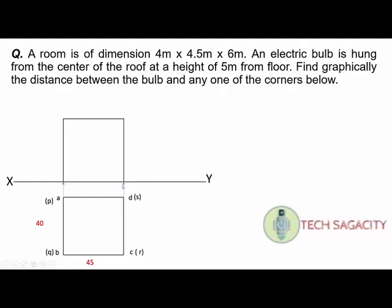The dimensions are 45 and 60, with height 6 giving 60 mm. Naming the floor points: P', Q', S', R' for the floor, and A', B', C', D' for the roof in the front view. Naming is confirmed.